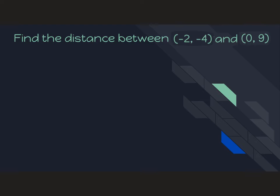For our last example, we start the same way. We label X1, Y1, X2, Y2. And then we plug that into our formula. So remember, our formula is X2 minus X1 squared plus Y2 minus Y1 squared.